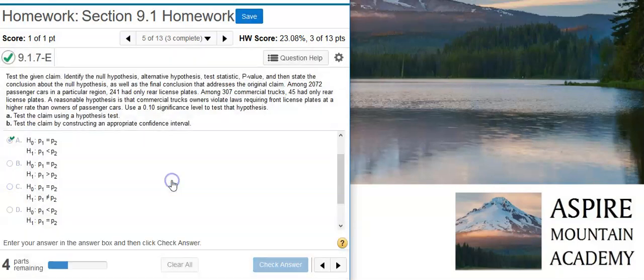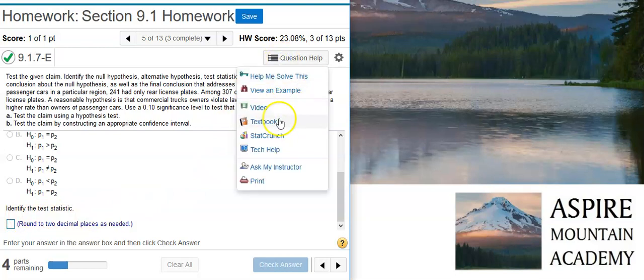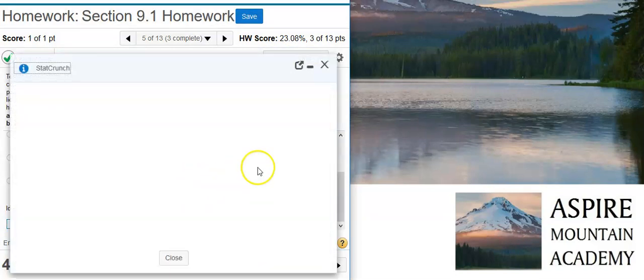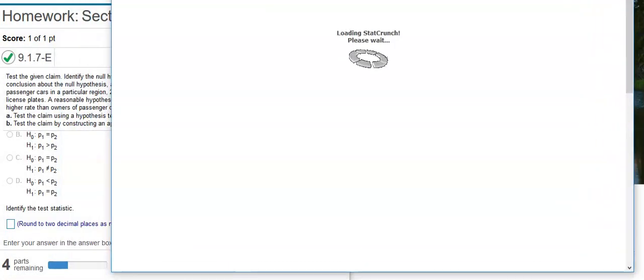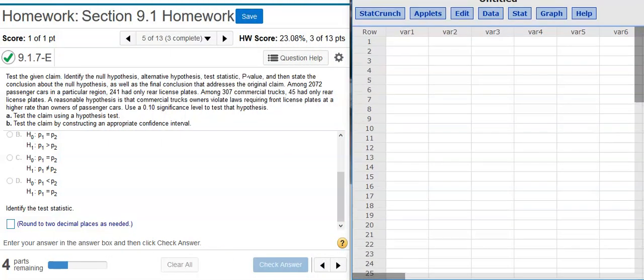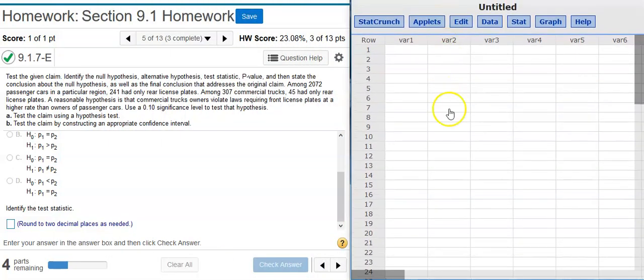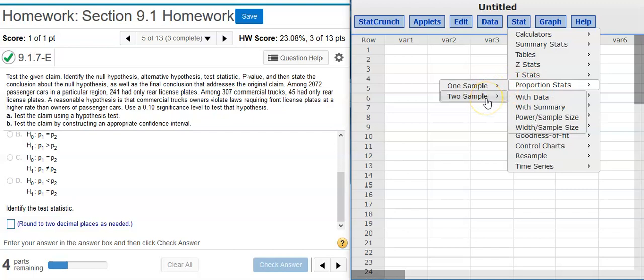Well done! Now, the next part of part A wants us to identify the test statistic. And to do that, we need to whip out StatCrunch. So, I'm going to pop out StatCrunch here. And we'll resize this window to give us a better view of what's going on. And, okay, here in StatCrunch, I'm going to go to Stat, Proportion Stats, because we're dealing with proportions, Two Sample, because we have two samples, with Summary, because we don't have any actual data.